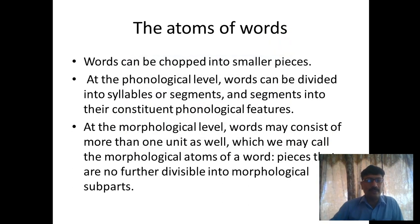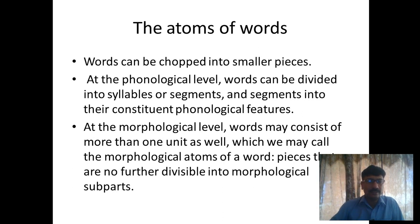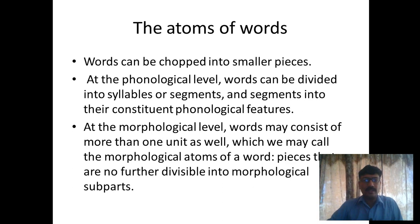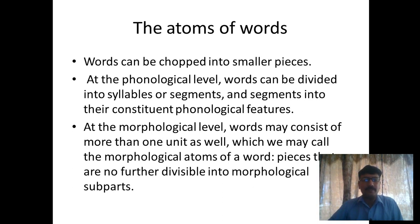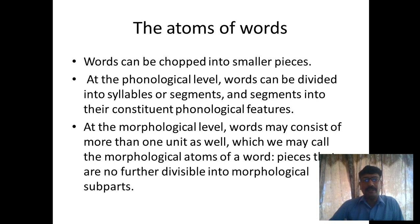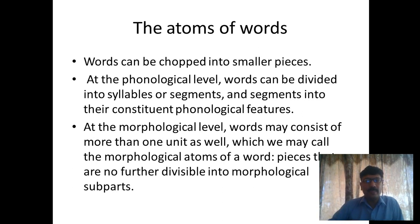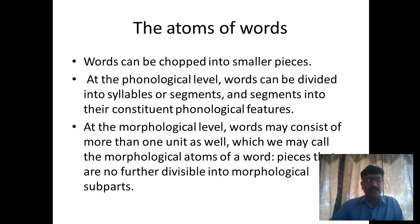At the morphological level, words may consist of more than one unit, which we call the morphological atoms of a word — pieces that are no further divisible into morphological units. This is the level where words are divided into their minimal pieces. Whatever minimal division is possible in a word at the morphological level, those pieces cannot be further divided, just like atoms.